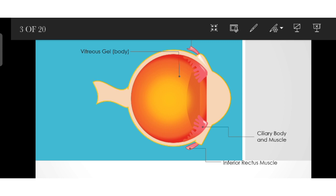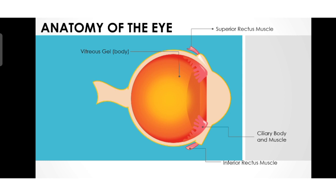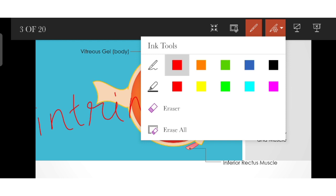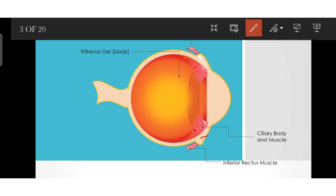Now let's move on to the ciliary body. Here we can see the ciliary body. The ciliary body is an intrinsic muscle — spelled I-N-T-R-I-N-S-I-C. These are smooth muscle fibers that support and modify the shape of the lens.